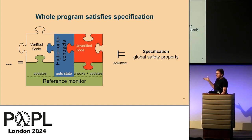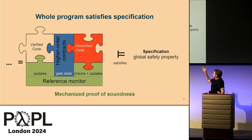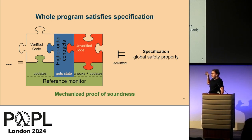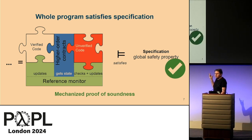All of this is mechanized in F-star. We proved a soundness theorem asserting that if we have a piece of code verified with respect to a global safety property, then using our compilation framework we can link it securely against any unverified code. With this soundness theorem and full mechanization, we get our strong guarantees back.